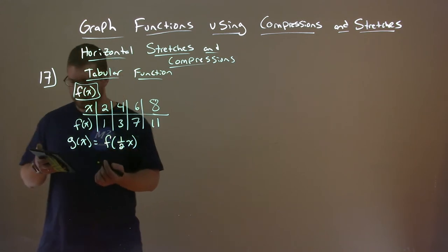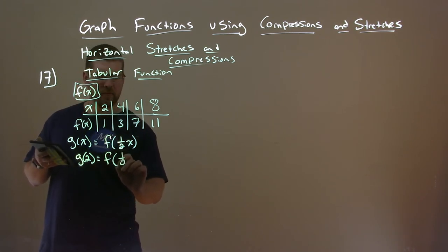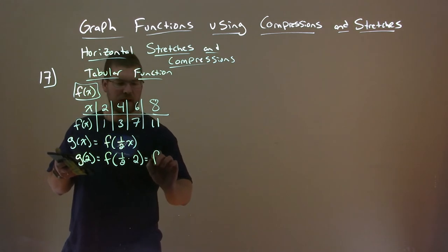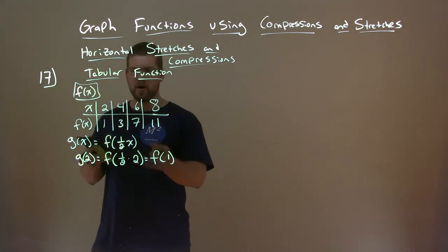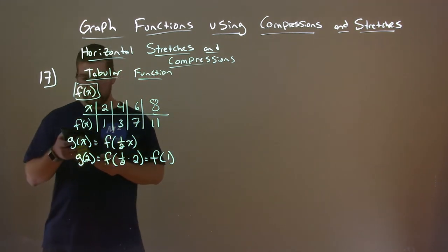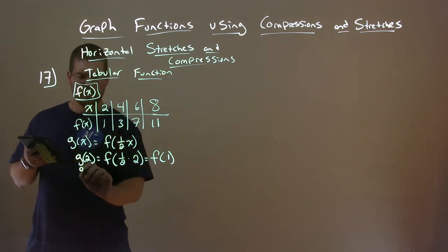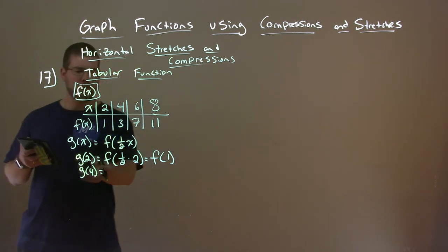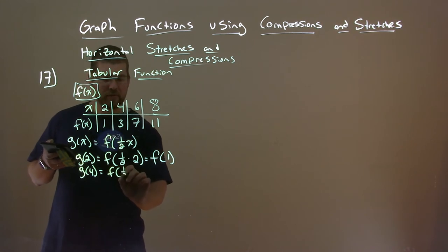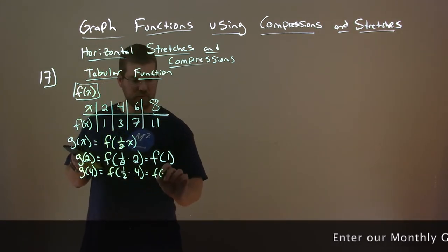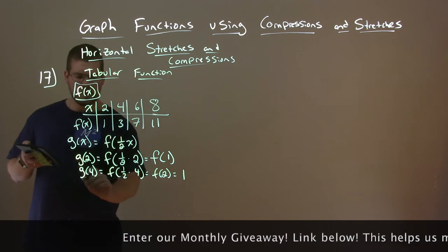What is g of 2? Well, g of 2 is equal to f of one half times 2, which equals f of 1. But we don't have a value for f of 1. So our input values for g may need to be twice as large as the input values for f. Let's try g of 4: that's f of one half times 4, which equals f of 2, which equals 1. Now we have a value.